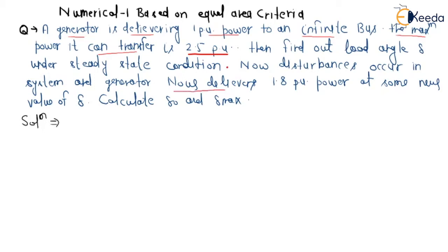After the disturbance, the generator now delivers 1.8 per unit power at some new value of delta. Calculate delta_on and delta_max. So first we understand the question: a generator is delivering one per unit power to an infinite bus, so p = 1 pu. The maximum power it can transfer is 2.5 pu, so p_max = 2.5 pu.